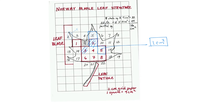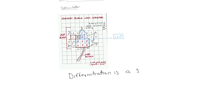This splitting or division process is known as differentiation. For getting the final area, we have to add all these parts — that addition process is known as integration. So this is the basic physical meaning of differentiation and integration. Differentiation is a splitting process, and we are splitting to get a more accurate value.